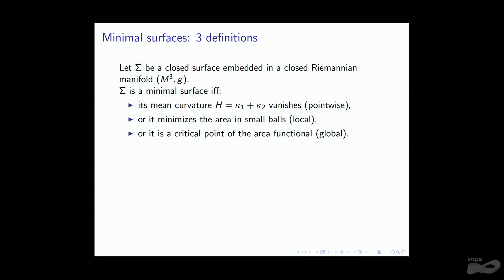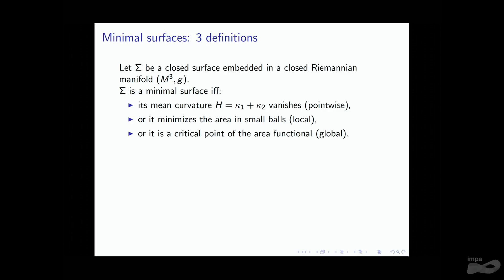The second condition is a local one: sigma minimizes area in small balls. You imagine your surface in M, look at a point and a small ball centered there. You deform sigma only inside that ball, leaving sigma unchanged outside. If every time you move sigma inside the ball you have to increase the area, you say it locally minimizes area, meaning the whole surface is minimal. The last definition — the one I prefer — is that a minimal surface is a critical point of the area functional.